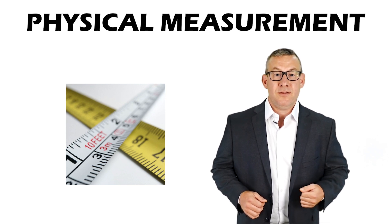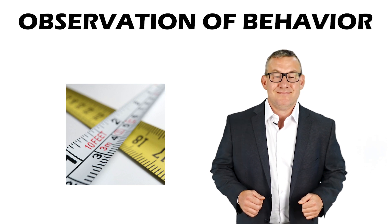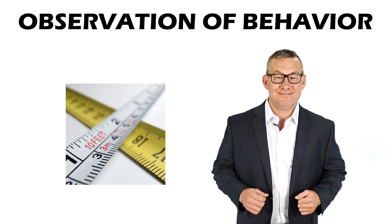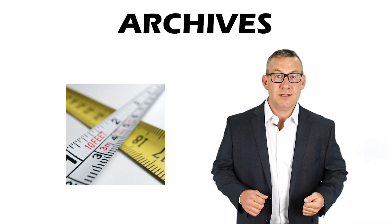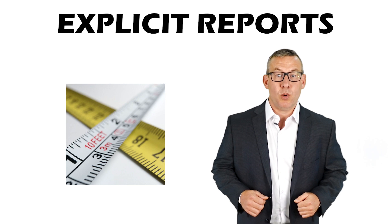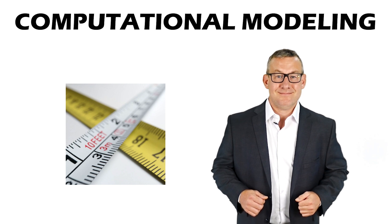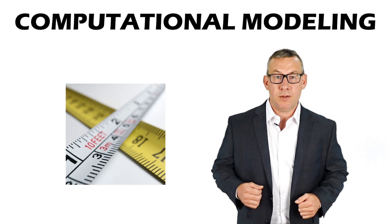Physical measurement is measurement of the physical properties of the Earth or its inhabitants. Observation of behavior is measurement of observable actions or activities of individuals or groups. Archives are measurements from records that have been collected for other purposes. Explicit reports are measurements of beliefs people express about things. Computational modeling takes measurements from models as simplified representations of reality.